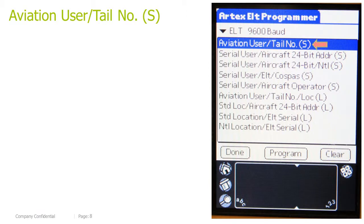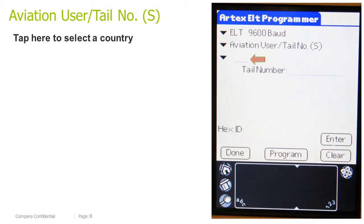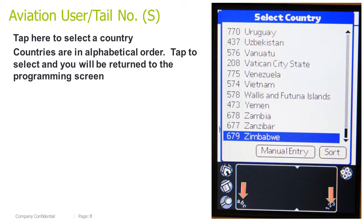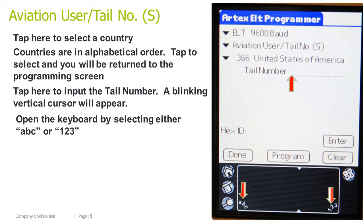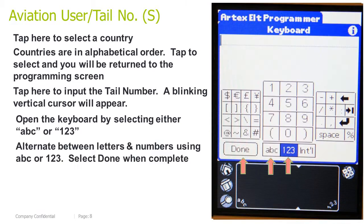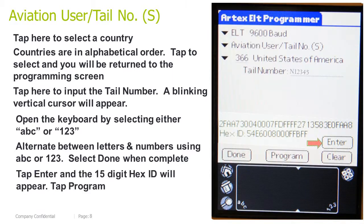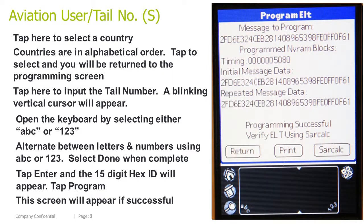Aviation user, tail number short. Tap here to select a country — countries are in alphabetical order. Tap to select and you will be returned to the programming screen. Tap here to input the tail number. A blinking vertical cursor will appear. Open the keyboard by selecting either ABC or 123. Alternate between letters and numbers using ABC or 123. Select Done when complete. Tap Enter and the 15-digit HEX ID will appear. Tap Program. This screen will appear if successful.